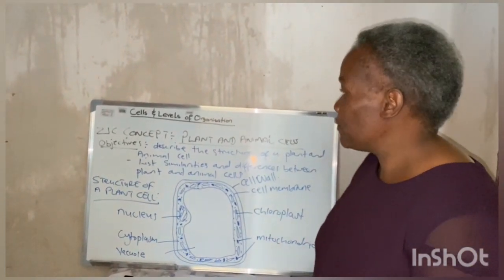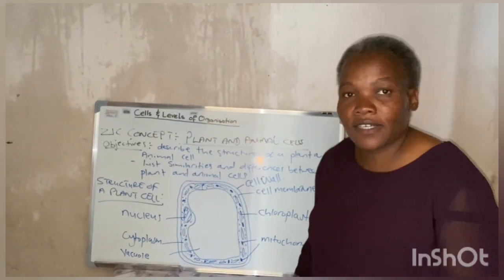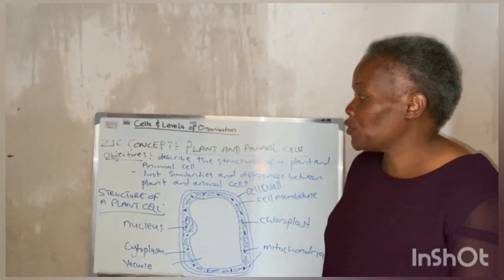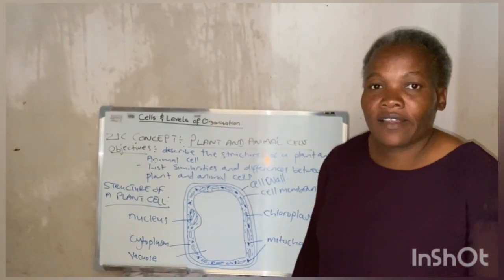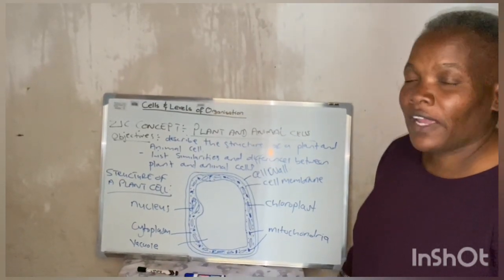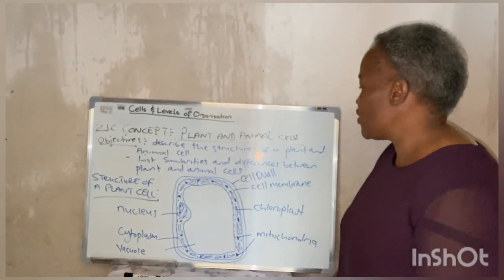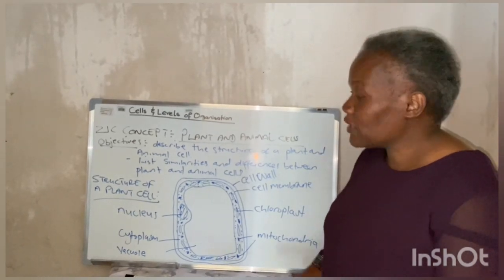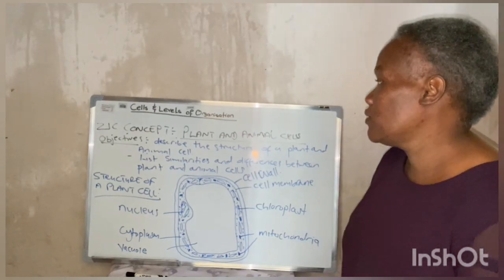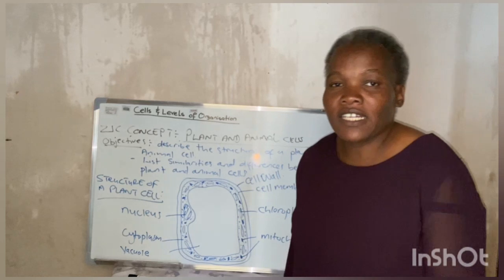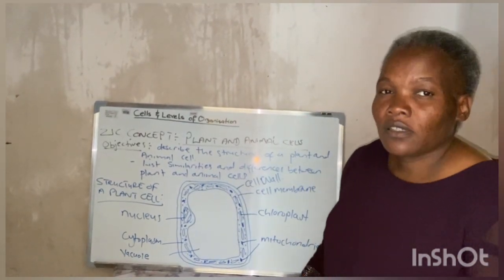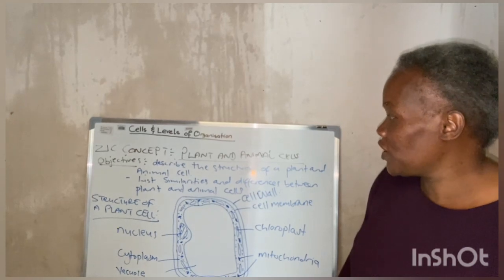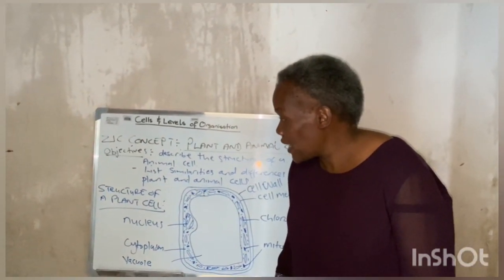Today we are going to look at cells and levels of organization. This is going to be a series of topics ranging from ZJC up to A-level, and today we are going to look at a ZJC concept on plant and animal cells. By the end of the lesson you should be able to describe the structure of a plant and animal cell, draw it, label it, and state the functions of the different features of the cell. You should also be able to list similarities between plant and animal cells as well as the differences between these two cells.